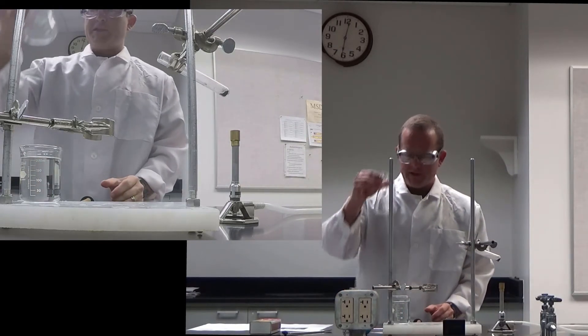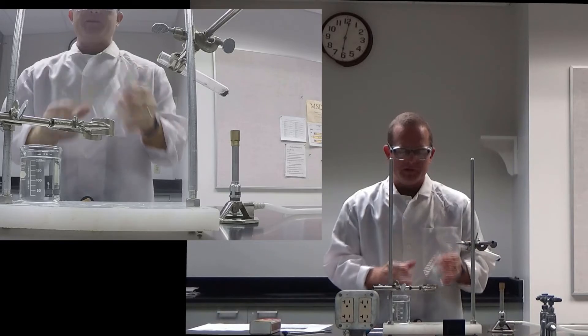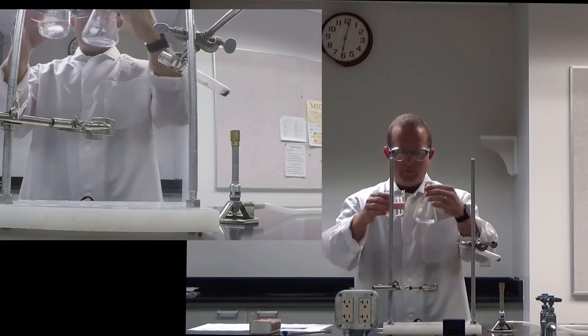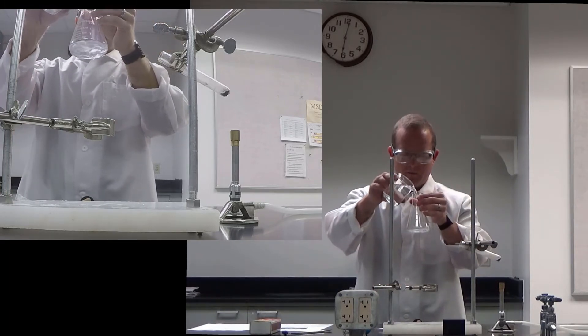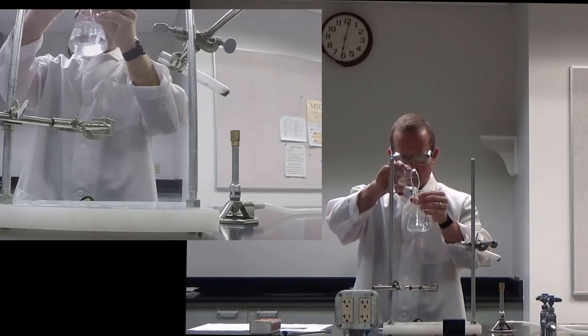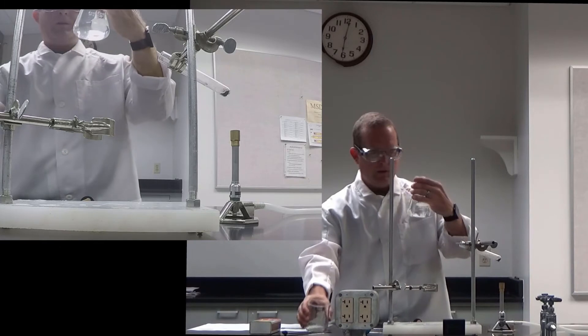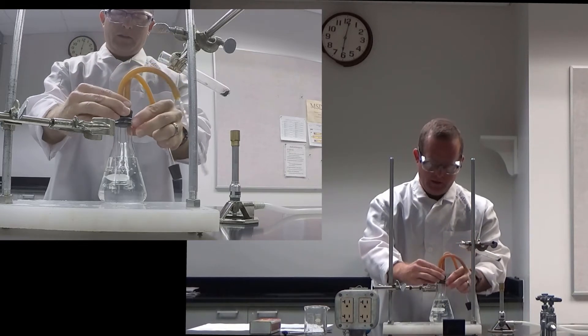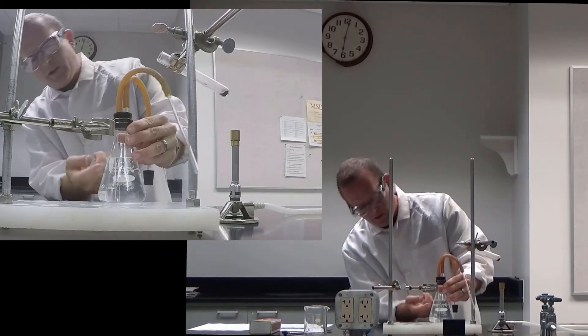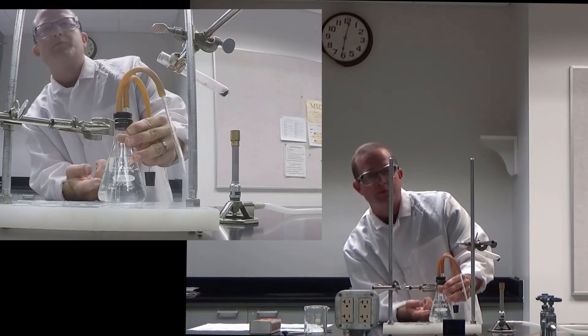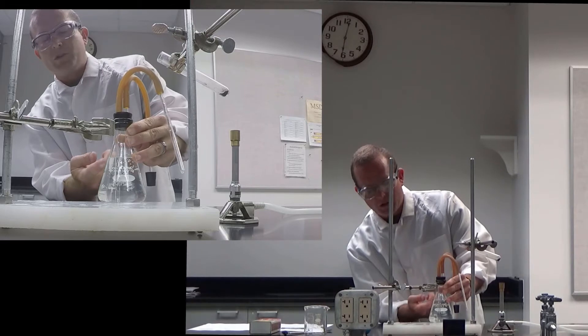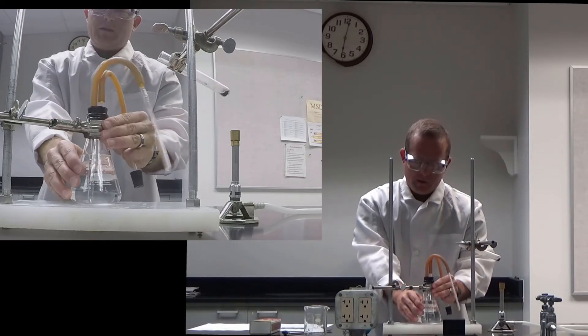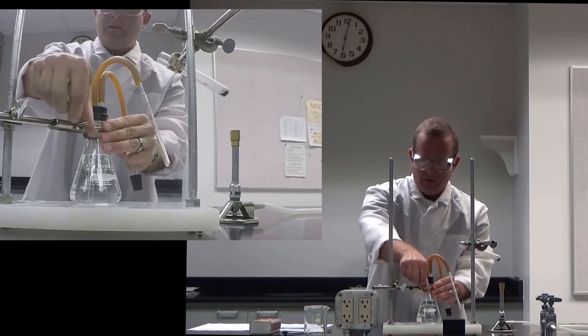Now to set up our gas collection vessel. So we have a 250 milliliter Erlenmeyer flask. Fill that about up to the neck with water. So more than 200 milliliters. The most important thing is that there be enough water in here so that a good amount of it, probably 150 milliliters or so, can be displaced before it hits the bottom of that glass tube there.